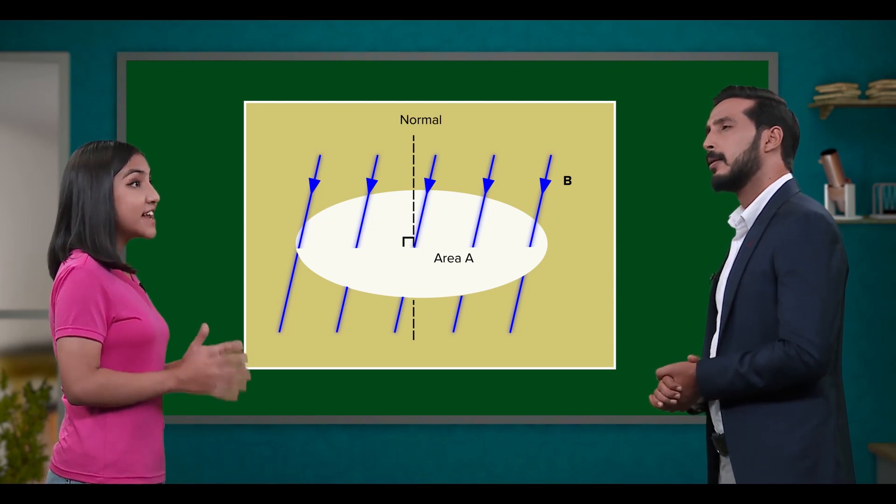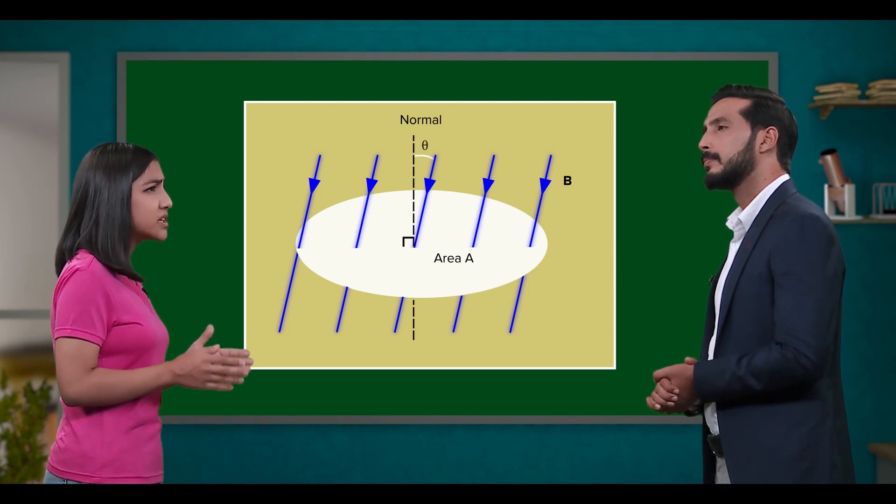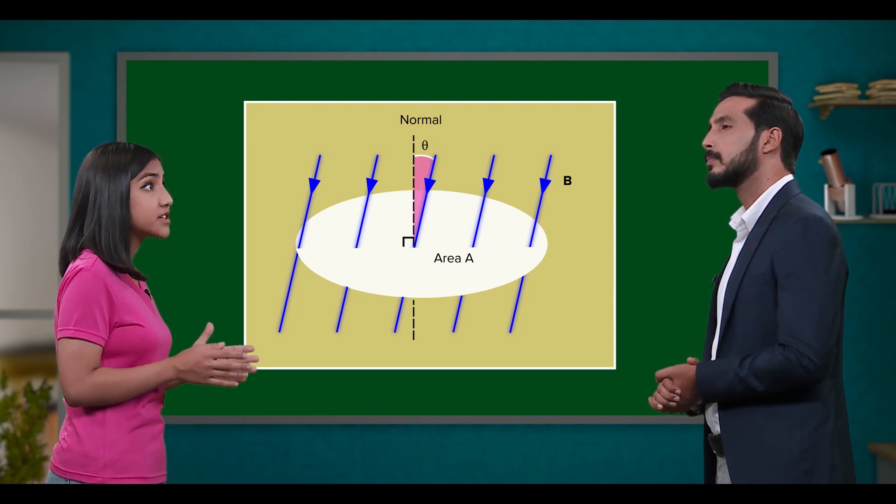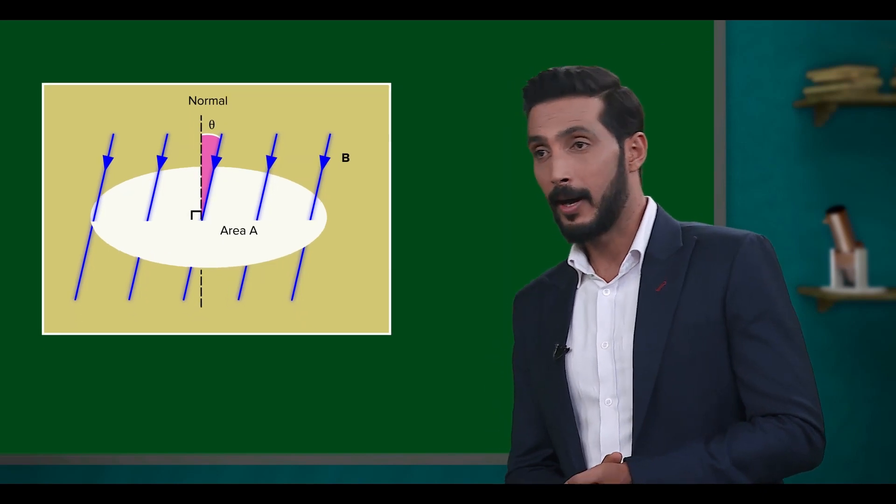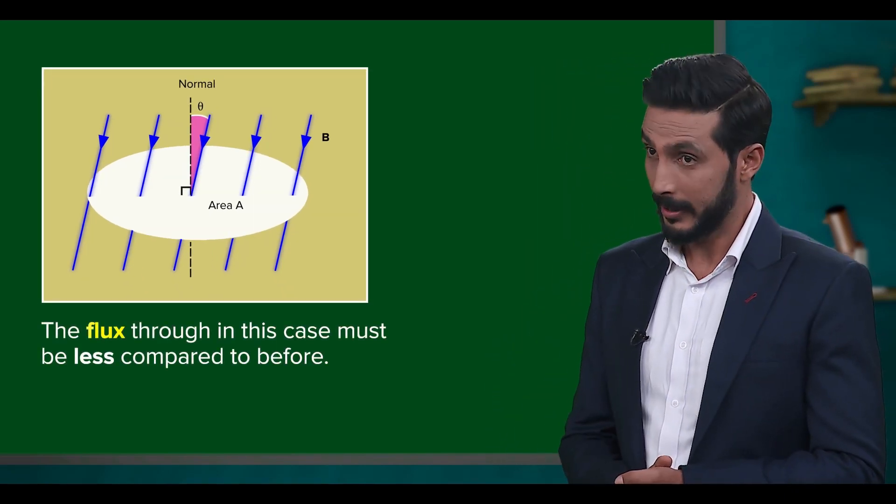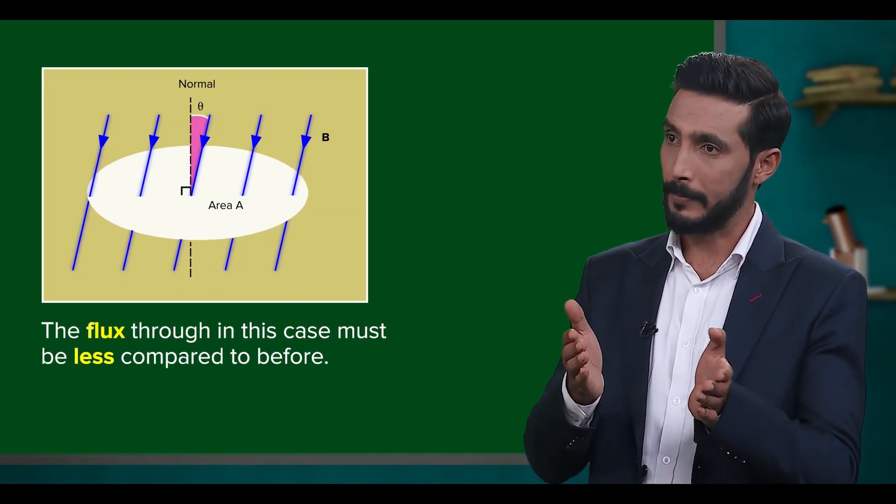Ah, you're right. Now, the angle theta between the field lines and the normal vector is not equal to zero degrees. Yes. This would imply that the flux through in this case must be less than previously. So far, so good?